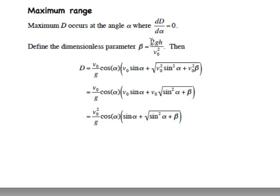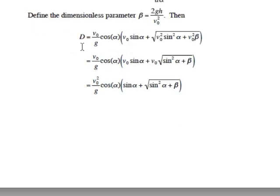Now, what I'm going to do to make this look a little simpler, is I'm going to define this dimensionless parameter beta, which is going to be sort of a speed ratio. 2gh, the numerator, is the square of the speed that gives you height h if it fired straight up. So, if you fire it straight up at the speed that's the square root of 2gh, it'll reach a height h.